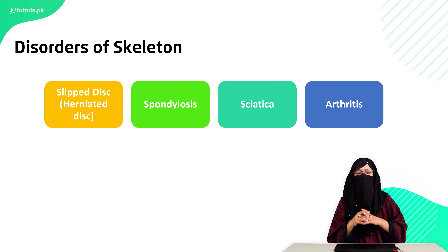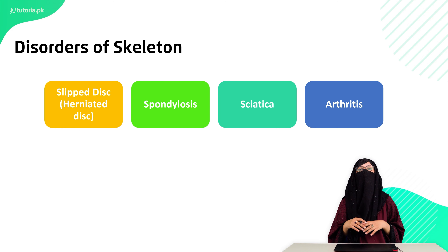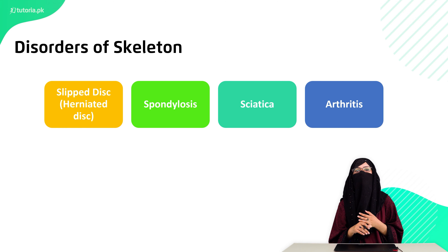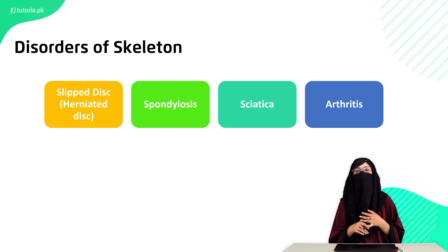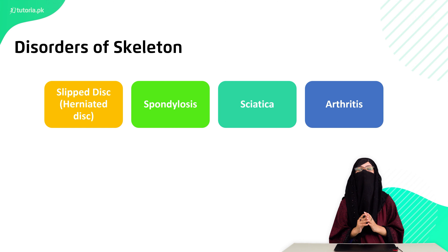Then we talk about other disorders, including herniated disc. When pressure is exerted on the spinal cord or vertebral column, the disc in the middle of the vertebral column herniates. Then we have spondylosis — basically your vertebral column fuses, causing problems bending your back. The third is sciatica — the sciatic nerve controls our legs, and if there is pressure on it from the vertebral column, it can cause pain, numbness, and even paralysis. The fourth is arthritis — a joint disease in which joints become stiff and affect movement, with over 100 types.